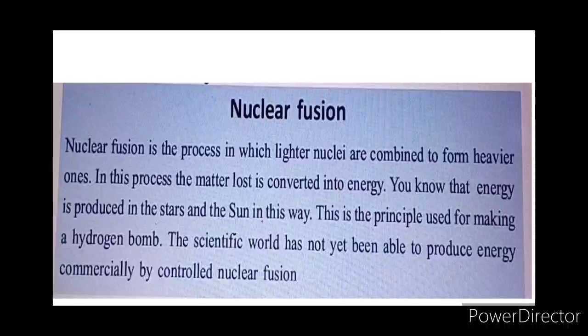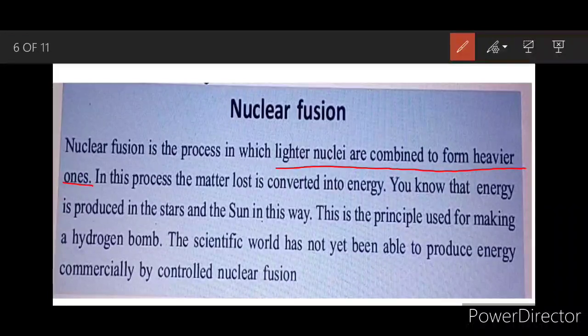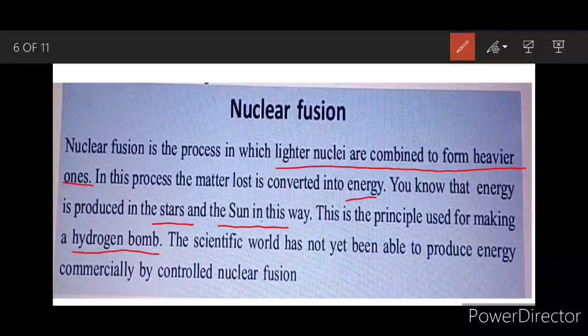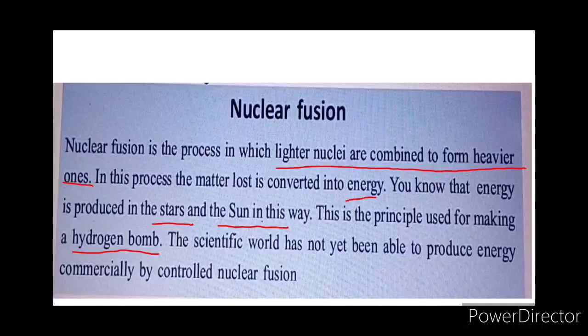Next is nuclear fusion. Nuclear fusion is the process in which lighter nuclei are combined to form heavier ones. In this process, the matter lost is converted to energy. You know that energy is produced in the stars and the sun in this way. This is the principle used for making a hydrogen bomb. The scientific world has not yet been able to produce energy commercially by controlled nuclear fusion.